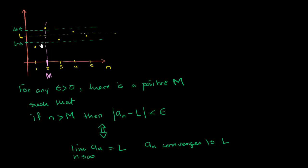And we can see right over here, at least visually, if we pick M there and take an n larger than that M — if n is equal to 3, a sub n seems to be close enough; if n is 4, a sub n is even closer, it's within our epsilon. So if we can say this is true for any epsilon that we pick, then we can say that the limit exists, that a sub n converges to L. In the next video, we'll use this definition to actually prove that a sequence converges.